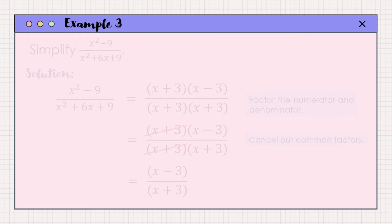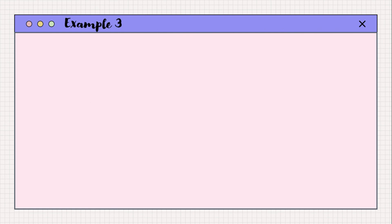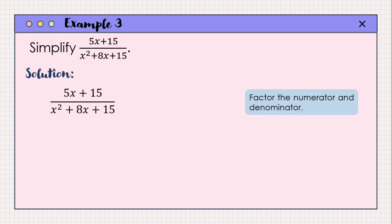Let us have our last example: simplify 5x plus 15 all over x squared plus 8x plus 15. First, let us factor the numerator. To factor 5x plus 15, we get the GCF — greatest common factor — of the two terms, which is 5. We divide 5x by 5 to get x, and 15 by 5 to get 3. So the factored form of the numerator is written as 5 multiplied by quantity x plus 3.